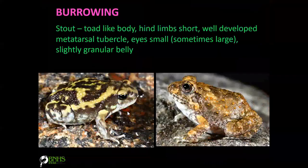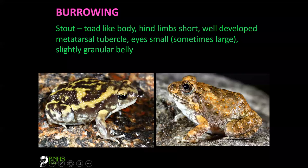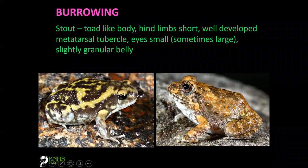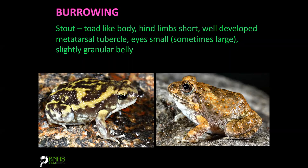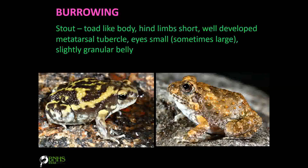To identify burrowing frogs: they have a very stout, toad-like body; hind limbs are short but well-developed for digging; the metatarsal tubercle is very well developed; eyes are small in some cases; and the body is slightly granular. These characters help you distinguish burrowing frogs from water-inhabiting individuals.